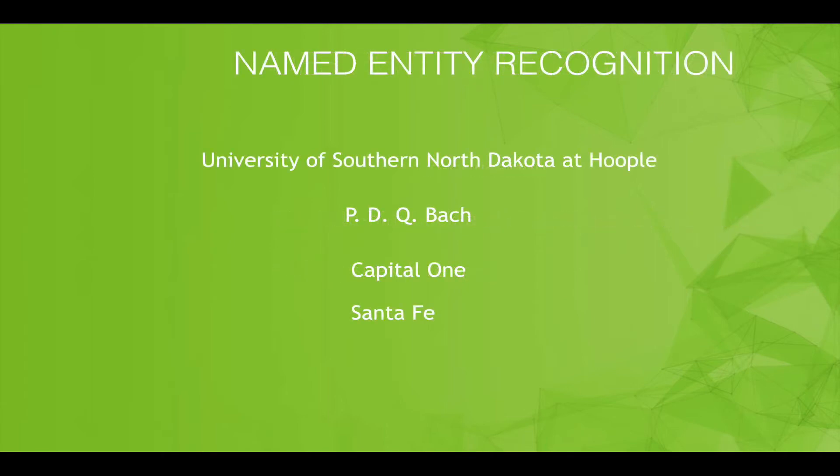Then we look at larger units. This is a natural language processing component called named entity recognizers. The University of Southern North Dakota at Hoople, should we consider those all completely separate words or should we glom them together into one thing? PDQ-Bach, the same. So names, whatever they are, Jones-Smith, is that two different tokens or one token? Capital One, should Santa Fe be two words or one word? So a space isn't always a divider between words.